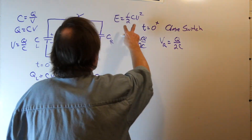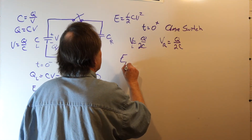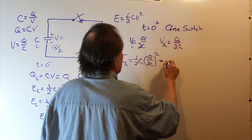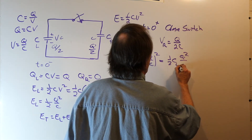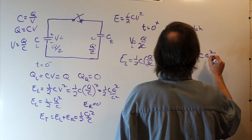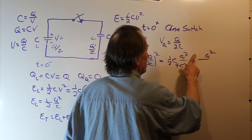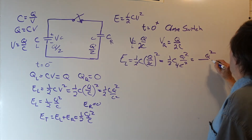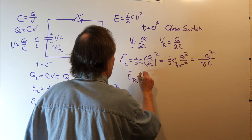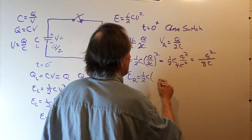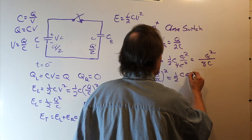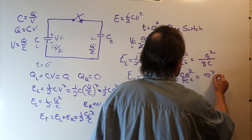Now, knowing the voltage, we can compute the energies. The energy on the left capacitor is one-half C V squared, where V is Q over 2C, so that's one-half C times Q squared over 4C squared, which gives Q squared over 8C. The energy on the right capacitor is also one-half C times (Q over 2C) squared, which again gives Q squared over 8C.